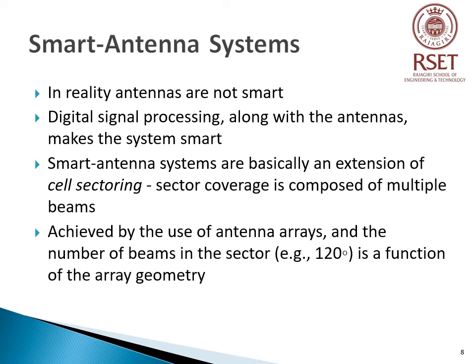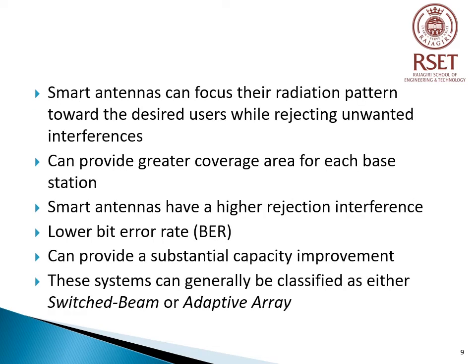In reality, antennas are not smart — it is the digital signal processing along with antennas that makes the system smart. Smart antennas are an extension of cell sectoring in which the sector coverage is composed of multiple beams, and smart antenna systems are realized by use of antenna arrays. Since smart antennas can focus their radiation pattern towards desired users while rejecting unwanted interference, the advantages include higher interference rejection, lower bit error rate, and substantial capacity improvement. Smart antenna systems can generally be classified as switched beam systems and adaptive array systems.